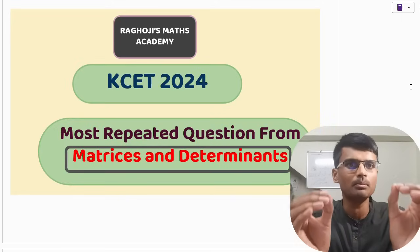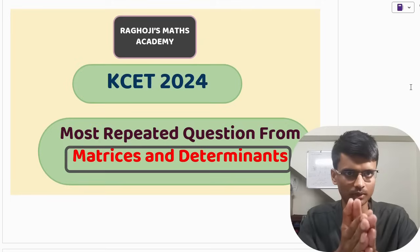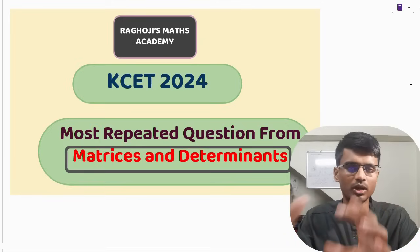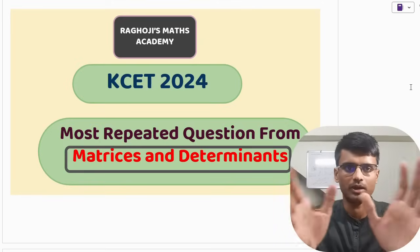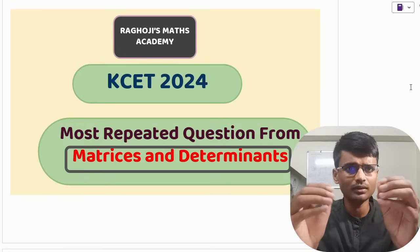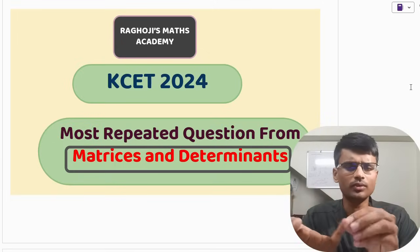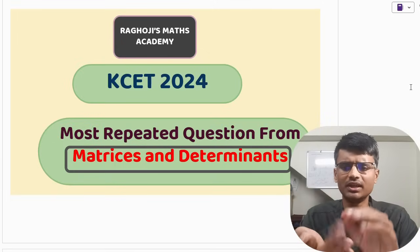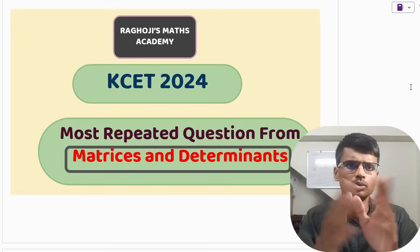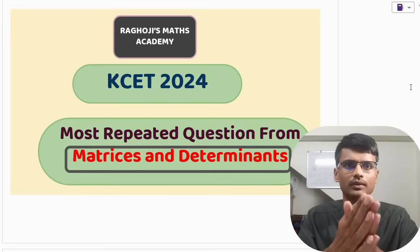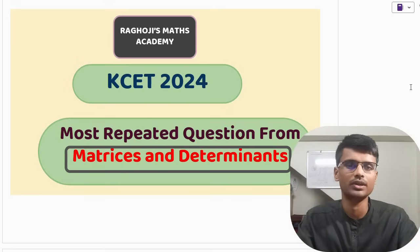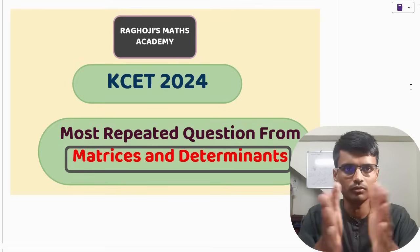This is a very simple chapter and close to 6 to 8 marks comes from this particular chapter. This particular question was asked in 2016, 17, 18, 19, 20, 21, 22 — in 2023 it was not asked. So there is a very high chance that a similar question can be asked in 2024.